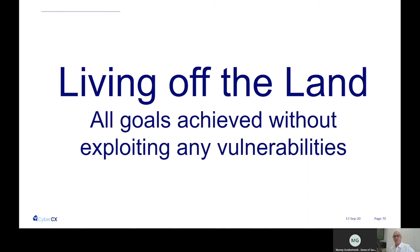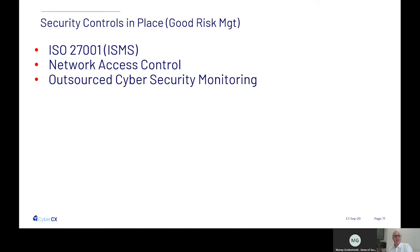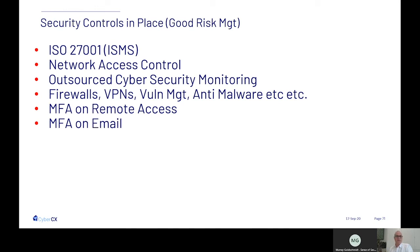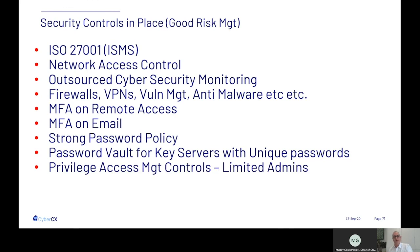We call this a 'living off the land' attack — all goals were achieved without exploiting any vulnerabilities. We used tools native to the operating systems to move horizontally and vertically within the environment, brought no external tools in, ran no vulnerability scans, and identified no exploitable vulnerabilities. It all started from physical access and placing a device on the network. This organisation had many good controls: ISO 27001 compliance, network access control, outsourced security monitoring, firewalls, VPN, vulnerability management, anti-malware, endpoint software, MFA on remote access and email, strong passwords, a password vault, and good privileged access management controls. But they weren't monitoring them properly.